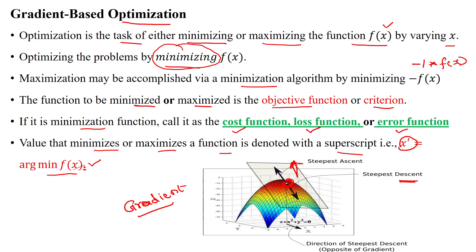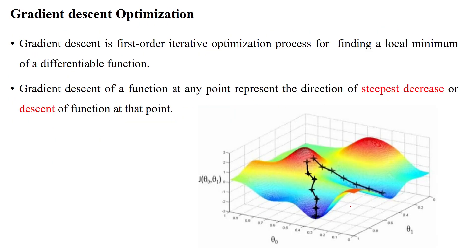Descent means decreasing the value — we decrease the value in a downward direction, while ascent means upward direction. For minimization purposes, we use the descent approach to reduce the error. Gradient descent is a first-order iterative optimization process used to find the local minimum of a differentiable function f(x).